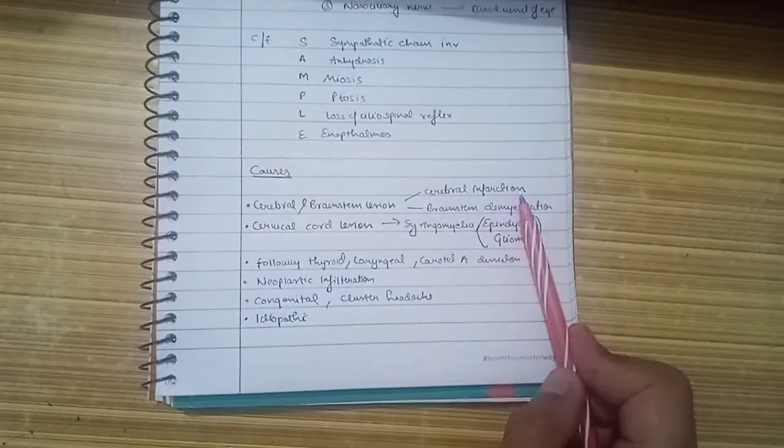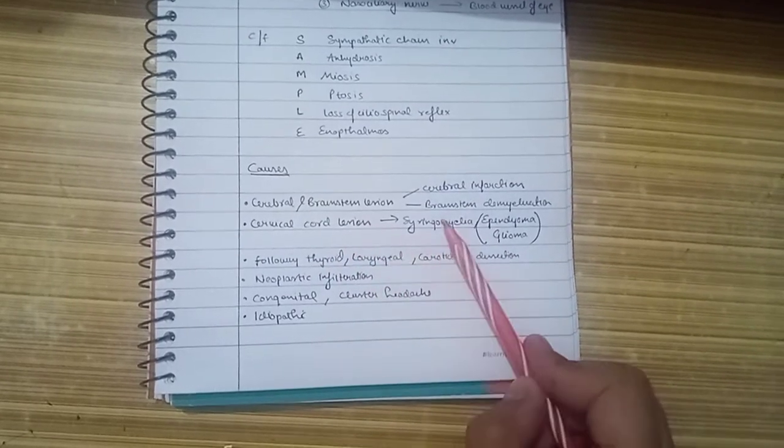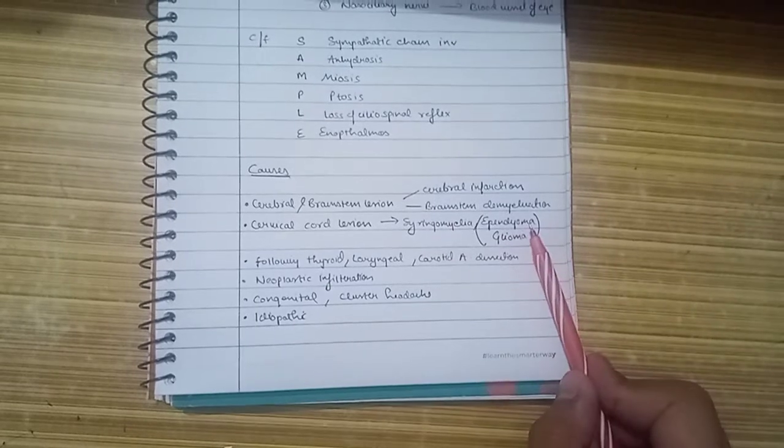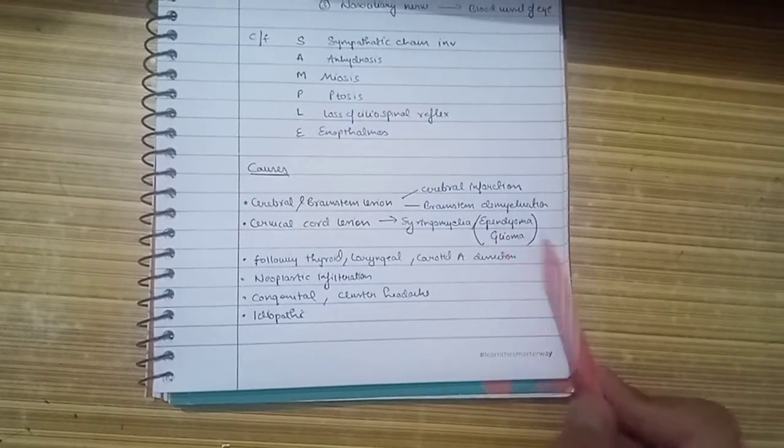The cerebral and brain stem lesions may be cerebral infarction and brain stem demyelination. There can also be cervical cord lesions like syringomyelia or cord tumors like ependymoma and glioma.